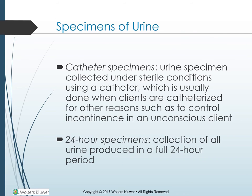A urine specimen can be collected under sterile conditions using a catheter, but this is usually done when clients are catheterized for other reasons, such as to control incontinence in an unconscious client. Clean catch midstream specimens are a lower-cost alternative due to reduced cellular and microbial contamination. For already-catheterized clients, the nurse clamps the drainage tube for 30 minutes, then cleanses the port with alcohol and aspirates a small amount of urine into a syringe.